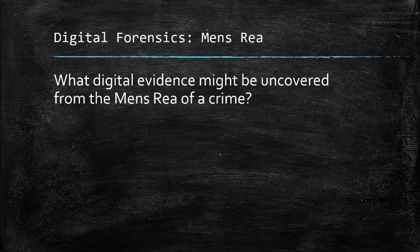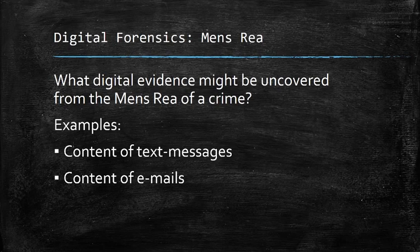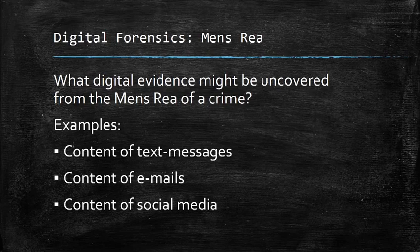What digital evidence might be uncovered from the mens rea of a crime? How do we know what someone was thinking or why they were committing a crime? You can look at the content of their text messages, the content of their emails, the content of their social media. These things help let you look inside their head and see their motivation for doing whatever it was that they did.